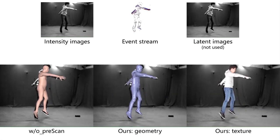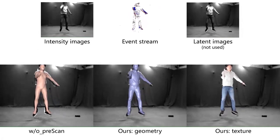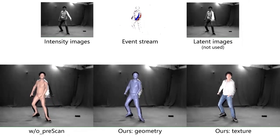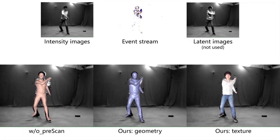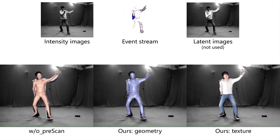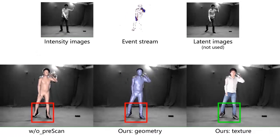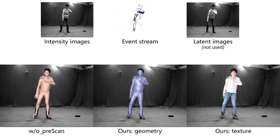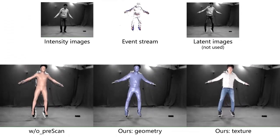Here, we further evaluate the influence of the person-specific template mesh. We compare to using only the simple model obtained from image-based body shape estimation at the first tracking frame, denoted as without pre-scan. Note that even without the person-specific template, our method still yields comparable pose tracking results. However, the template can improve the accuracy of the image overlay in the silhouette-based refinement stage.